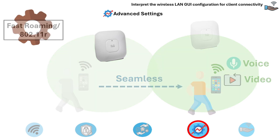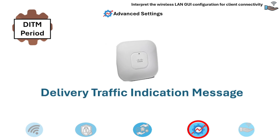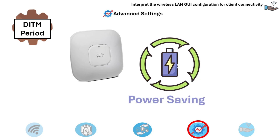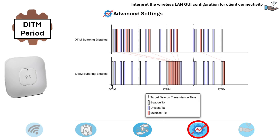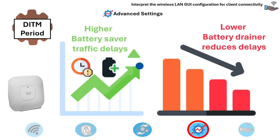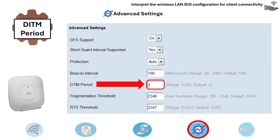The last advanced setting is the DTIM period, or Delivery Traffic Indication Message. This setting affects power saving. The DTIM interval determines how often clients in power save mode wake up to check for data. A higher DTIM interval allows devices to stay in power save mode longer, saving battery, but may delay receiving multicast traffic. A lower DTIM interval requires more frequent wake-ups, potentially draining battery faster, but reduces delays for multicast traffic. A DTIM interval of 1 or 2 is often recommended for devices requiring constant connectivity.